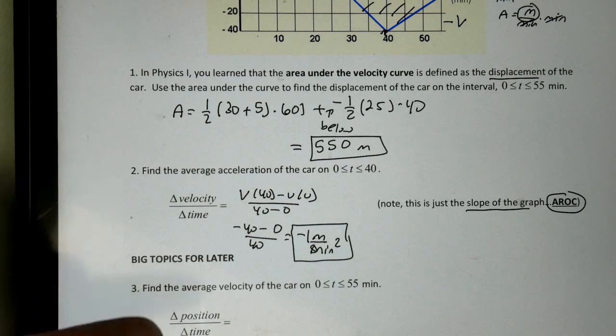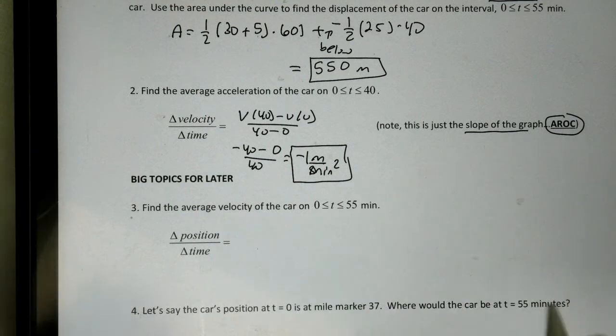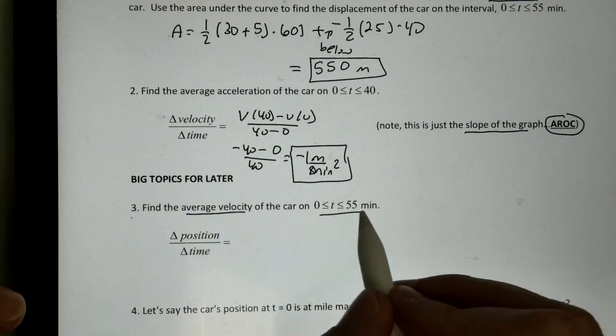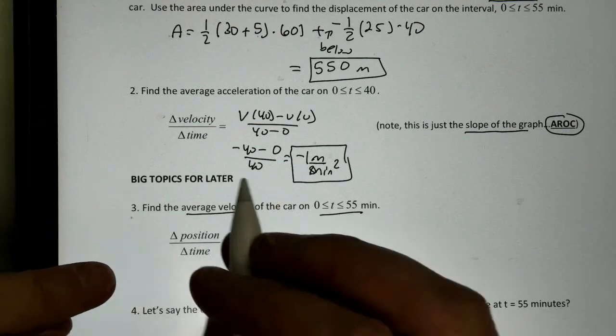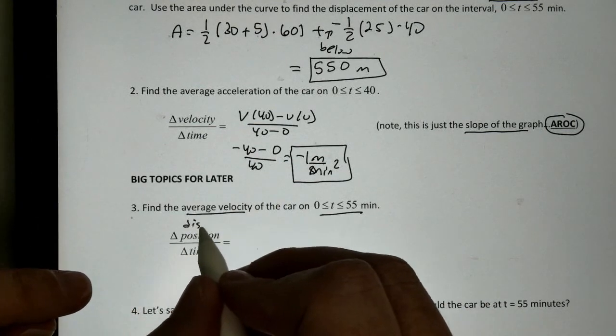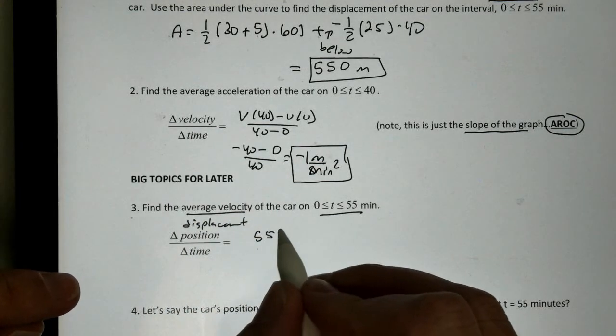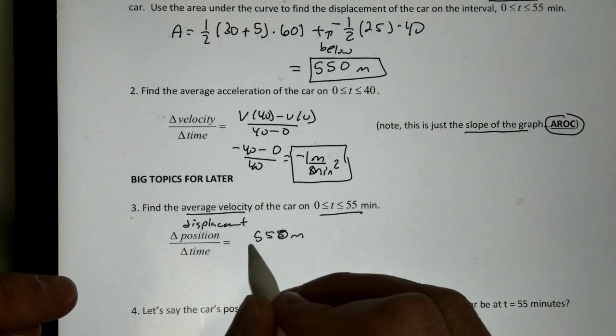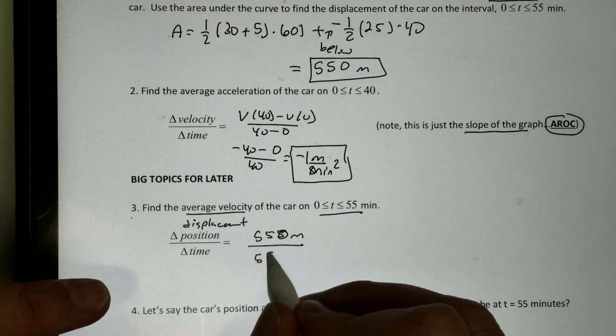Now, later on this year, next semester, we're going to get into some more big topics. Now, what if I want to find the average velocity of the car over the 55 minutes? Well, for this, I have to get my change in position. This is my displacement that we found earlier. That was at 550 meters. And I'm going to divide that by the time, which in this case is just 55 minutes.